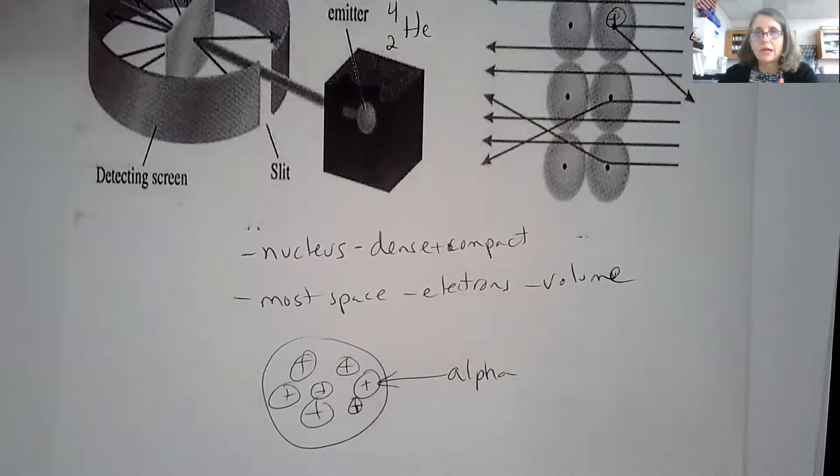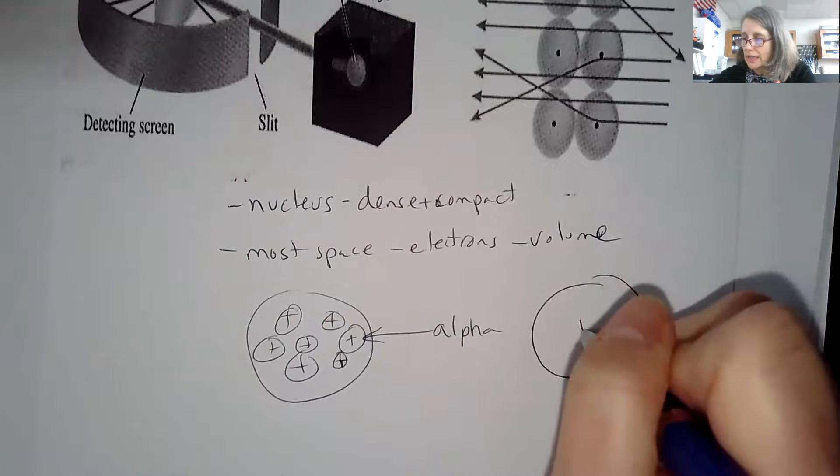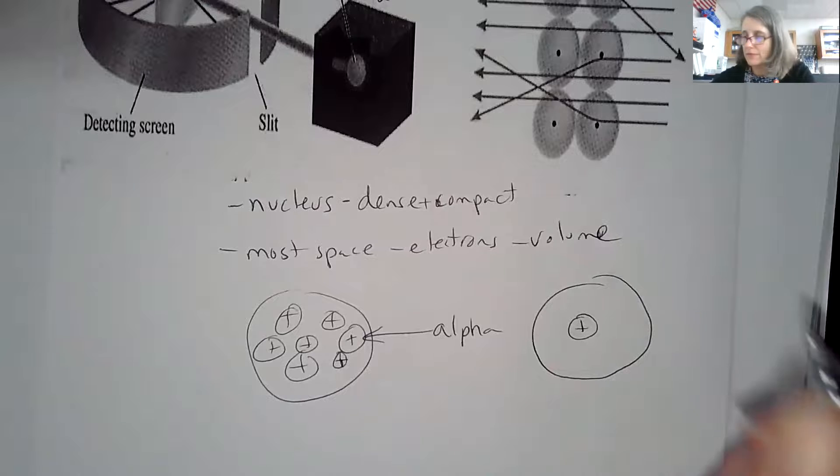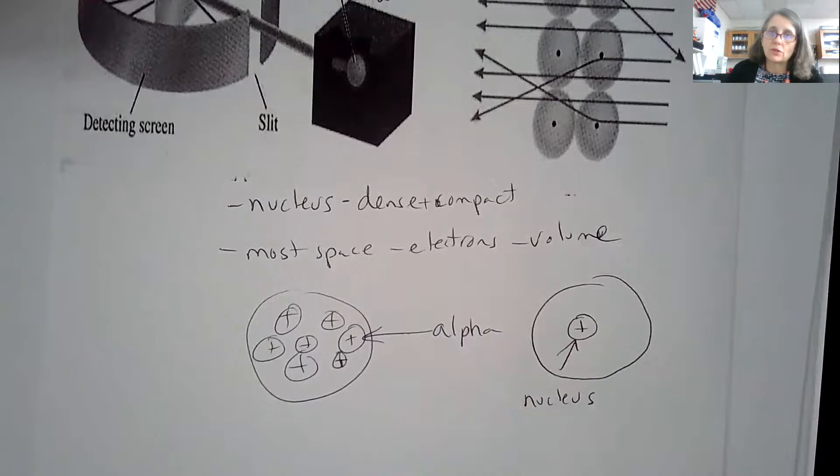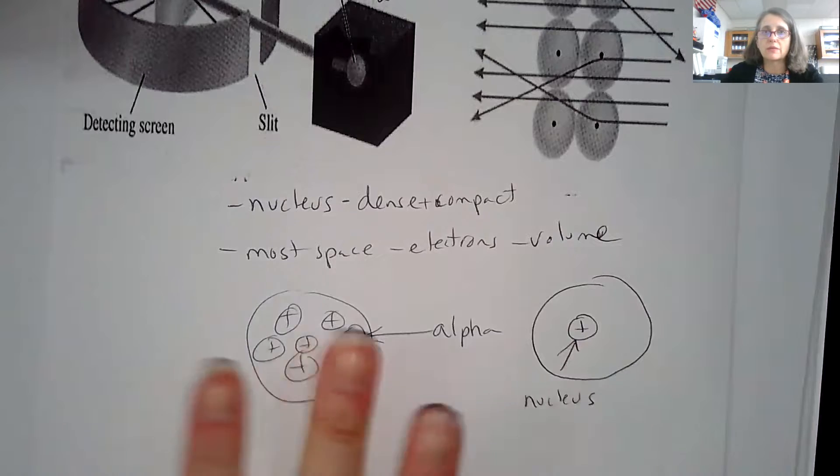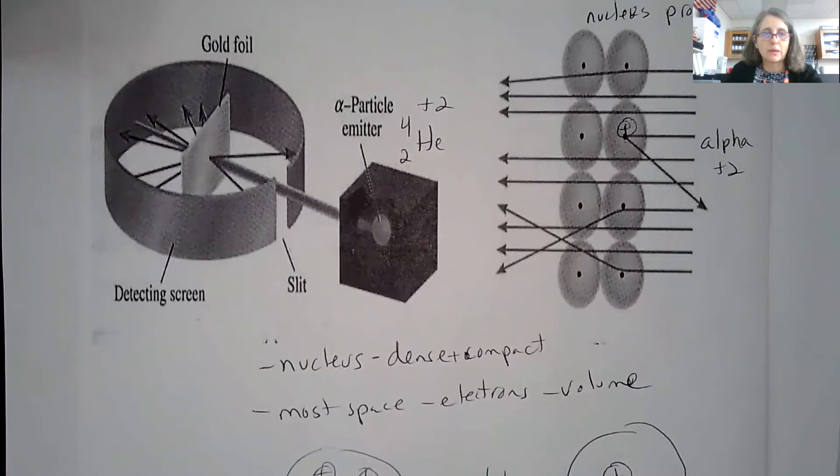It was no longer that protons were just everywhere in there. The protons were now located in the dense part of the nucleus. And that is what Rutherford was given credit for. That's the gold foil experiment.